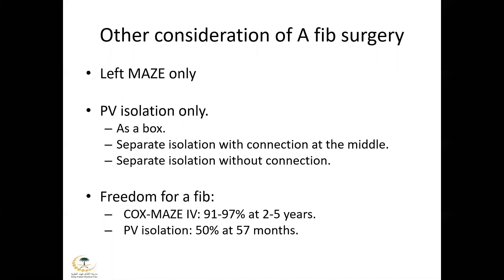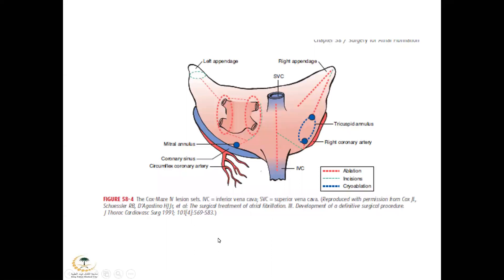Other considerations for AF surgery: some people do only a left-sided maze, some do pulmonary venous isolation only — either as a box, as separate isolation with connection in the middle, or without connection. The freedom from AF with Cox Maze IV ranges from 91–97% at 2–5 years. However, pulmonary venous isolation alone achieves only about 50% at 57 months, as referenced from Cox and James's publications.